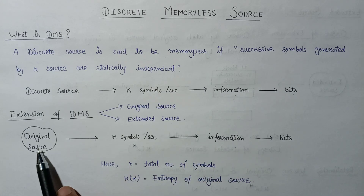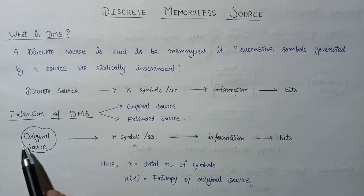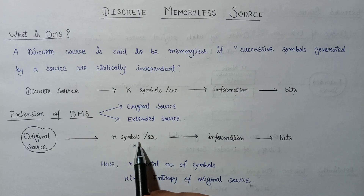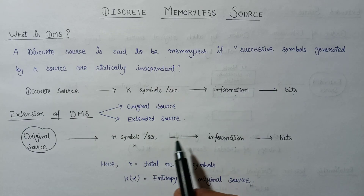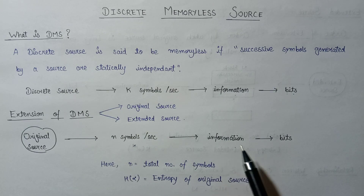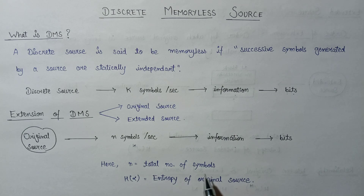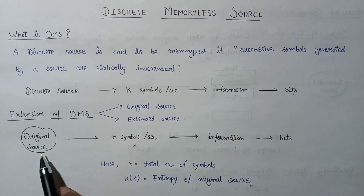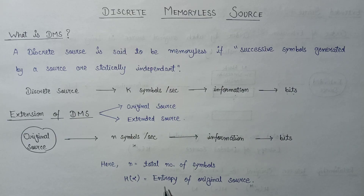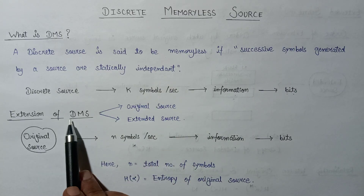The original source emits n number of symbols per second. These symbols have some information content that can be represented in the form of bits. Here, n represents the total number of symbols emitted by this original source. The entropy of this original source is denoted as H(α), which represents the entropy of the original source.